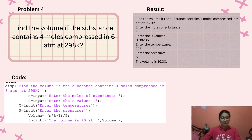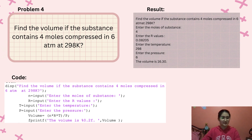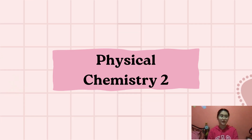For the last problem of Physical Chemistry 1: find the volume if the substance contains 4 moles compressed at 6 atm at 298 Kelvin. You enter the moles, which is 4; the R value, which is 0.08205; the temperature, which is 298 Kelvin; and the pressure, which is 6 atm. The volume is 16.30.